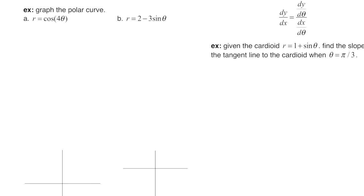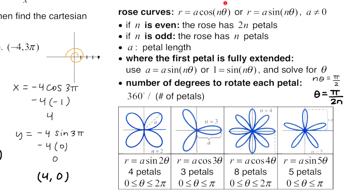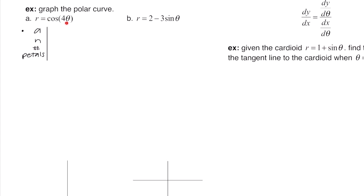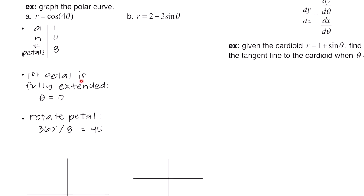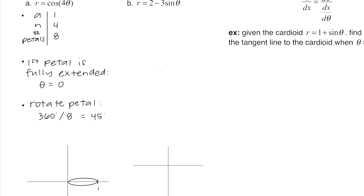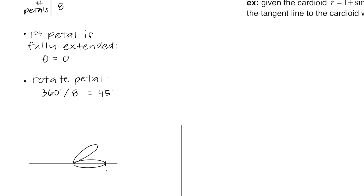Now we're going to graph polar curves. Our first example is r = cos(4θ). Since it has the form r = a·cos(nθ), it's a rose curve. n = 4 is even, so it has 2×4 = 8 petals. a = 1, so petal length is 1. Because the equation has cosine, the first petal is fully extended at θ = 0. The rotation between petals is 360°/8 = 45°. Starting at θ = 0, going out 1, then rotating 45° each time gives all 8 petals.